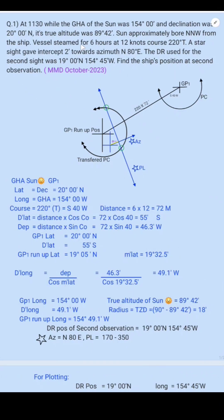First, let's understand the question. At 11:30, this is a high altitude sun observation, so we get a position circle (PC) with the GP of the sun as the center and TZD as the radius. I have drawn a rough figure: this is the GP of the sun, TZD is the radius. From here, the vessel steamed for six hours at 12 knots on a course of 220°, covering 72 miles (12 × 6). The GP run-up position is here.